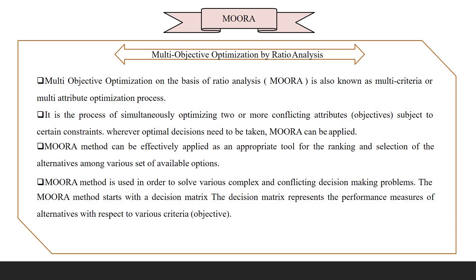In the MOORA process, two or more attributes or objectives are simultaneously optimized subject to certain constraints. MOORA is applied when an optimal decision needs to be taken, and is also used effectively for ranking and selection of refrigerants.